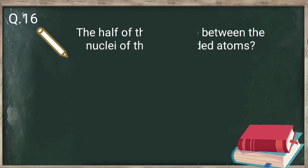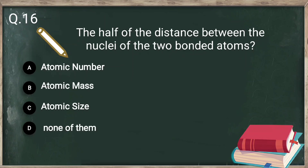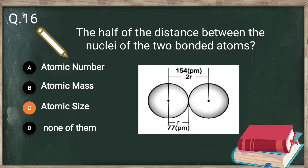Question number 16: atomic radius is half of the distance between the nuclei of two bonded atoms. The half of the distance between the nuclei is known as atomic size or atomic radius.